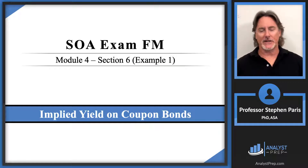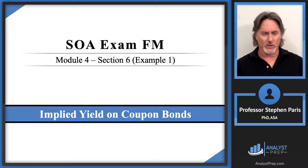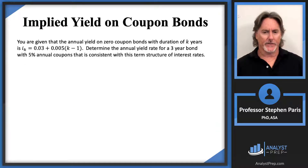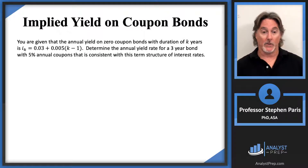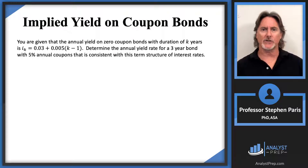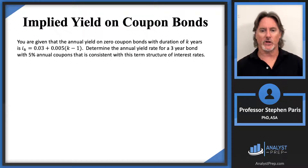In this video, we're going to look at implied yield on coupon bonds. Let's just get right to the example. You're given that the annual yield on zero coupon bonds with a duration of k years is I sub k equals 0.03 plus 0.005 times k minus 1. We'll determine the annual yield for a three-year bond with 5% annual coupons that is consistent with this term structure of interest rates.